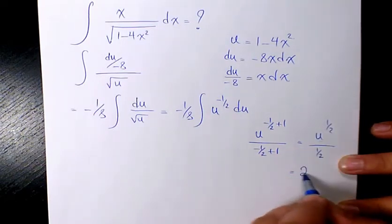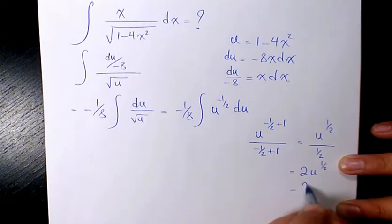So it's going to be 2u to the power of 1 over 2 or 2 root u.